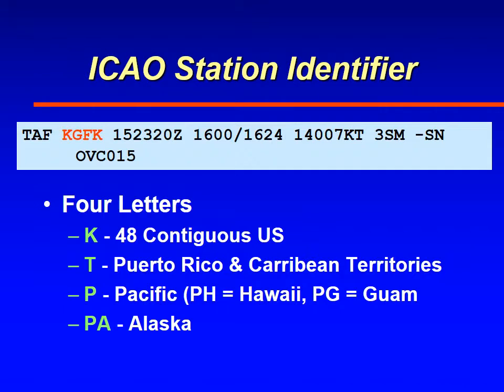Next comes the station identifier. The station identifier is a four-letter identifier. Here in the 40 contiguous United States it always starts with a K, but elsewhere it may start with another letter depending upon the country or region that they are making the forecast for.